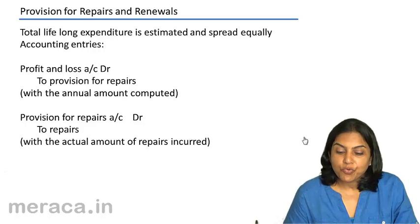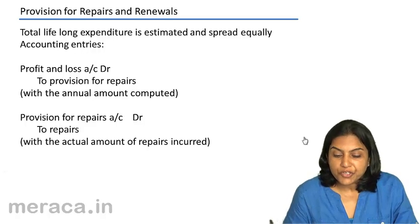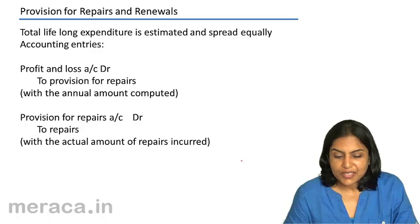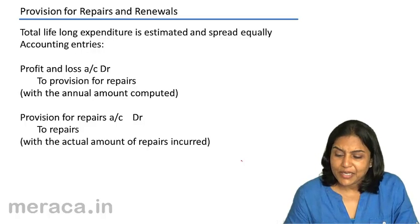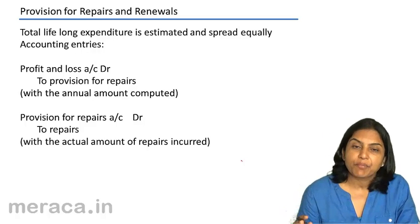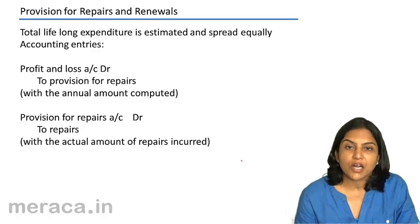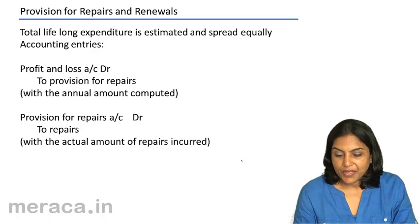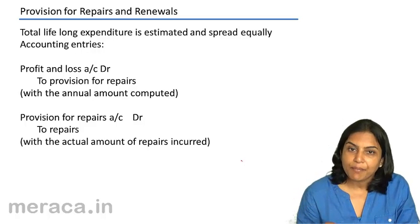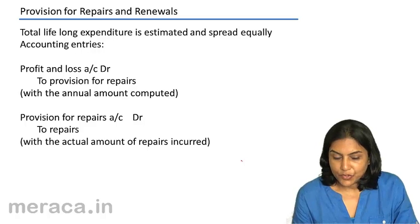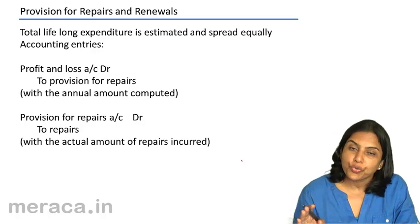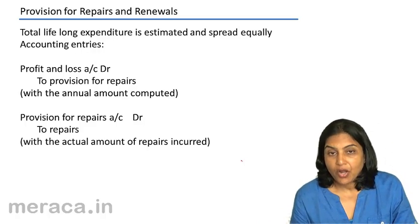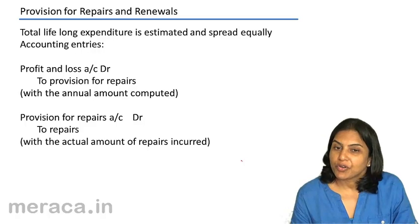We next move on to provision for repairs and renewals. Sometimes a separate provision account for repairs is maintained. The idea behind this is to have a uniform charge to the profit and loss account on account of repairs.